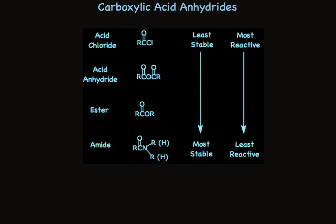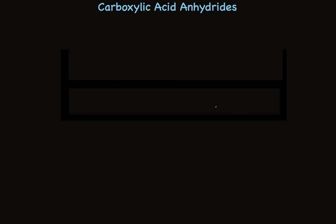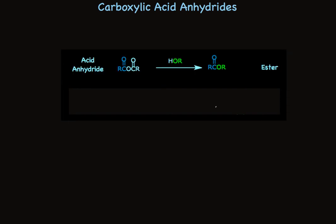This means that we can convert acid anhydrides into esters and amides in good yields using nucleophilic acyl substitution. The reaction details are very straightforward. Treatment of the anhydride with an alcohol makes an ester. The carboxylate portion of the product comes from the anhydride. The alkoxy portion of the ester comes from the alcohol.